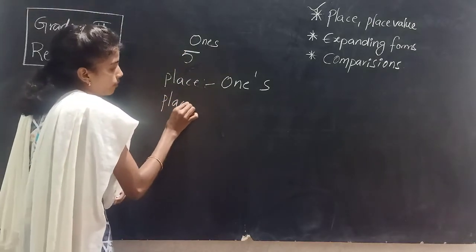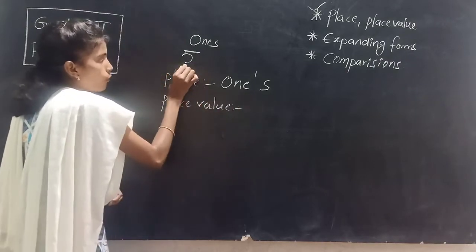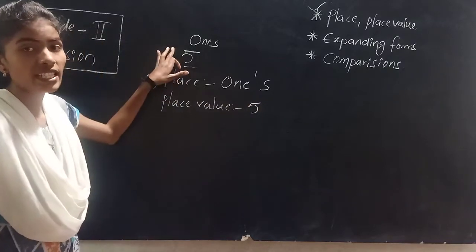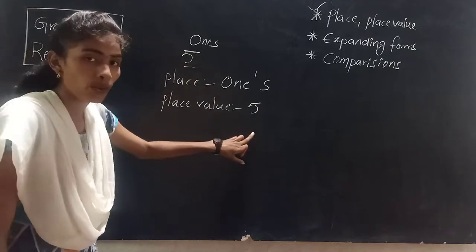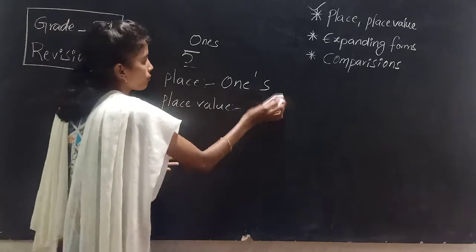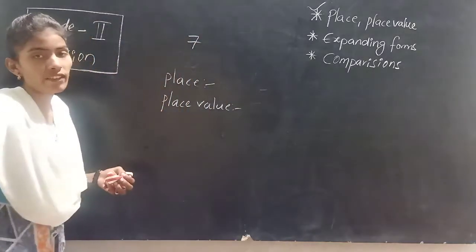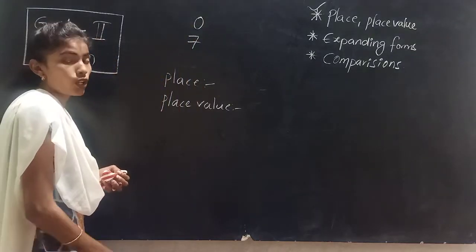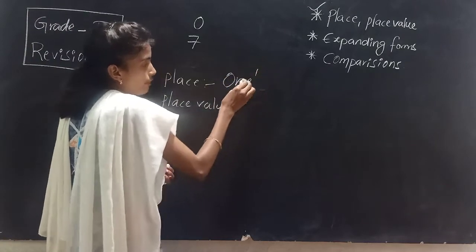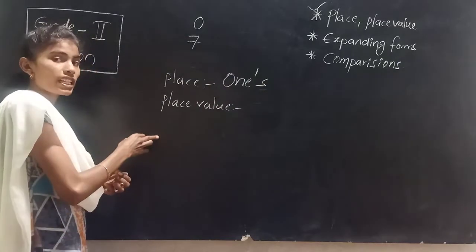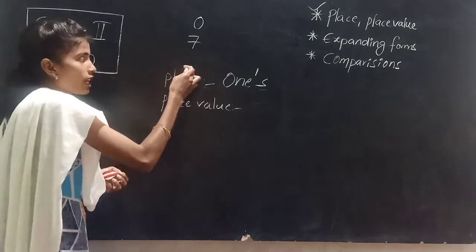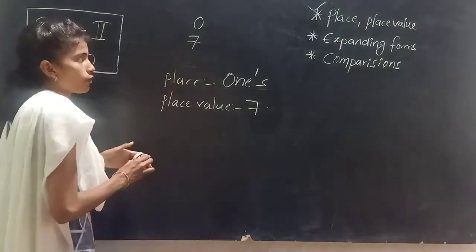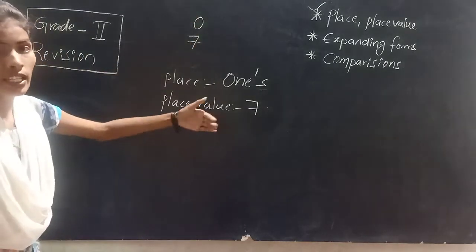Now, what is the place value of this number? 5 is a single digit number — it has only ones place. So the place value will also be that number only. For single digits, place value will be the number itself. So what is the place for 7? In single digit numbers, only ones place will be there. Place value for every single digit number is itself. So 7's place value is also 7. For ones place, the place value for single digit numbers will be the same as the number itself.